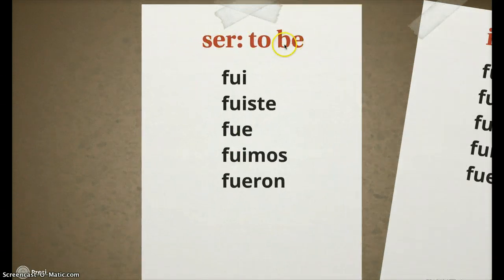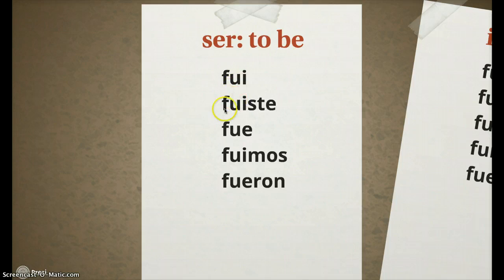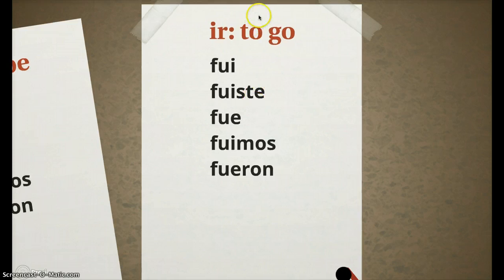Ser means to be: I was, you were, he was, we were, they were — fui, fuiste, fue, fuimos, fueron. And ir means to go: I went, you went, he went, we went, they went — fui, fuiste, fue, fuimos, fueron.